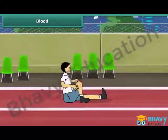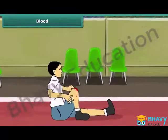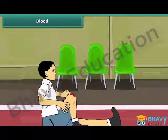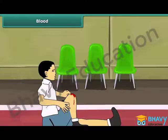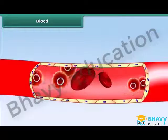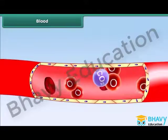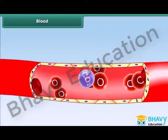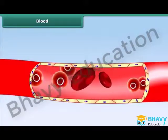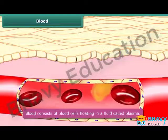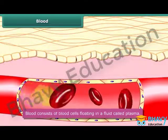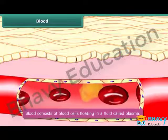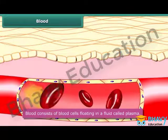Rahul participates in a hundred meter race at his school. While running, he falls down and hurts himself. Blood oozes out of the wound for a while and then clots. His curiosity is aroused — he wants to know how it happened. Blood is a fluid that is essential for our survival. It carries oxygen and nutrients to body parts and also carries waste away from body parts for removal.